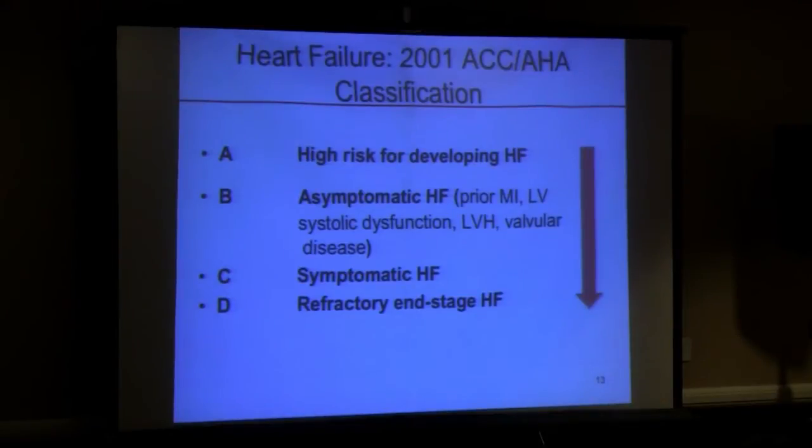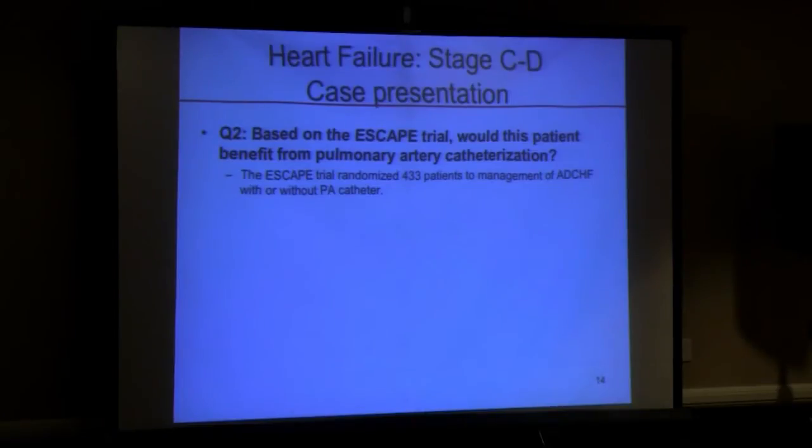Stage D is end-stage, meaning you can't go backwards in the new classification — you can't call somebody D and then make them a C later. So if you say this is stage D, you're committing them to transplant. Meeting this patient for the first time, I'd call him stage C on his way to D. But practically you have to make decisions — do you put in a PA catheter?